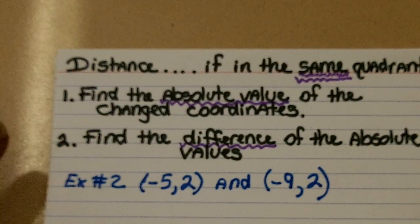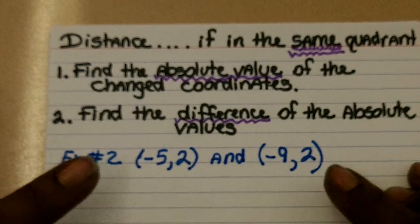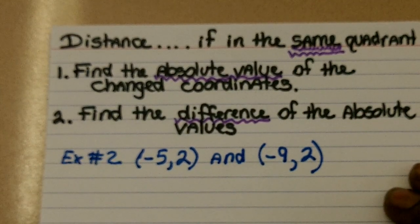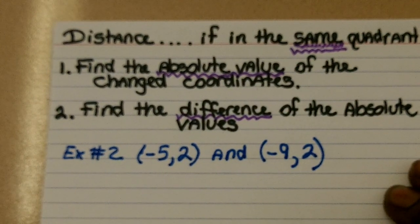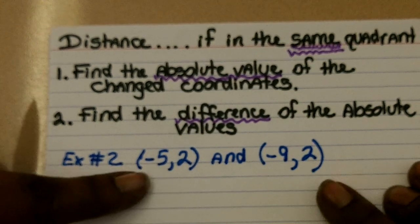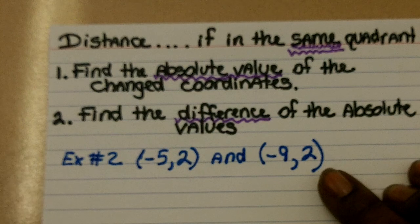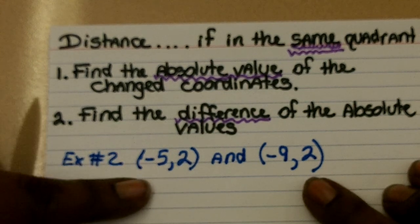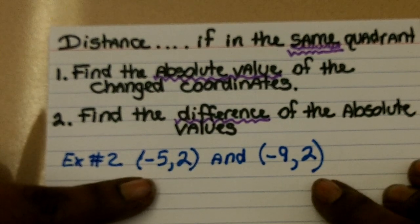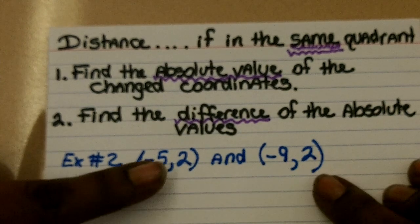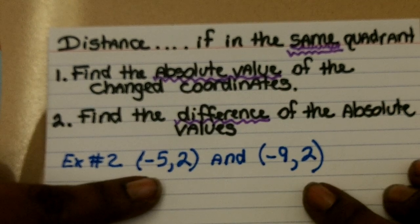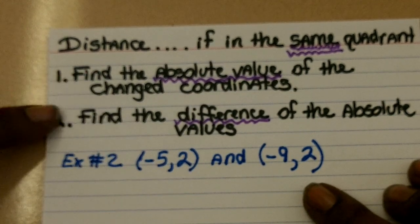Now, it won't always be that simple. Sometimes you will be given two ordered pairs like this and asked to find the distance between the two points. If you have two points located in the same quadrant, there are two steps to follow. Remember, we should be able to look at two ordered pairs and determine if they're in the same quadrant. Clearly, both of these points belong in quadrant two, so we can follow these two steps.